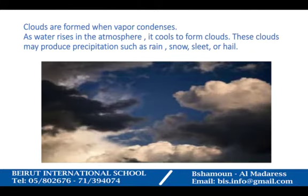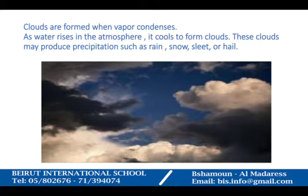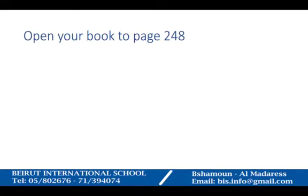Clouds are formed when vapor condenses. As water rises in the atmosphere, it cools, forming clouds. These clouds may produce precipitation such as rain, snow, sleet, or hail.